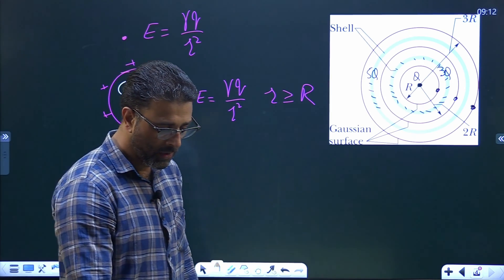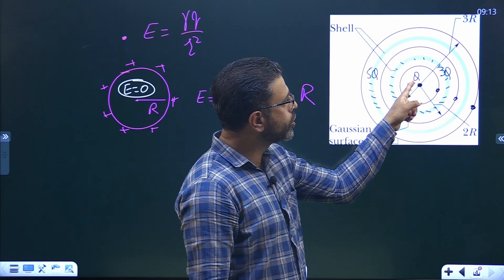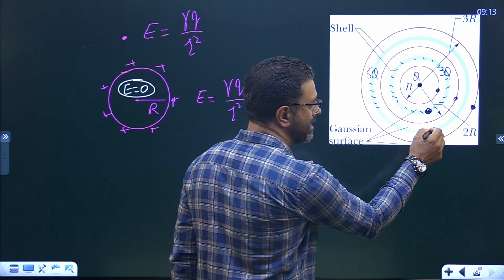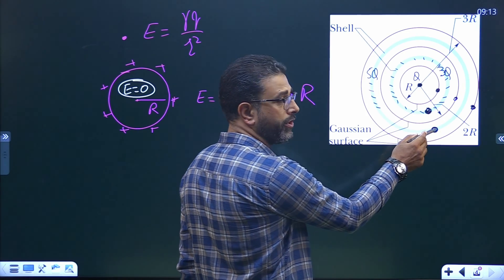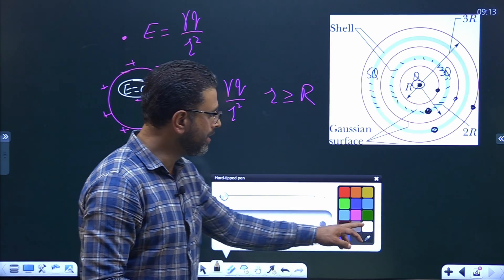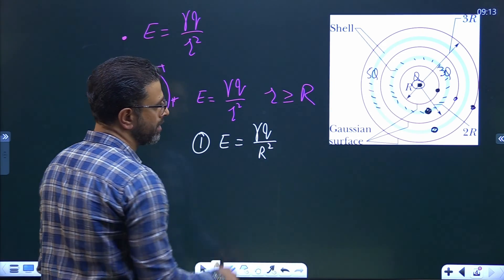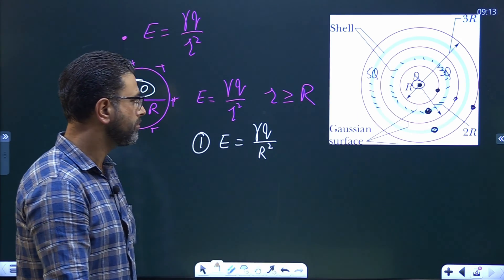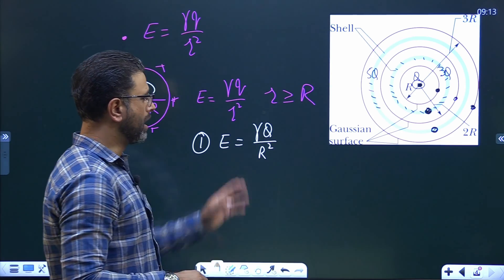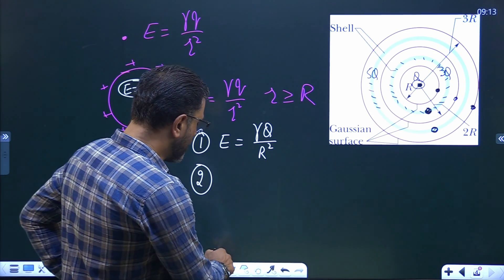For the first Gaussian surface at radius R: it has only charge Q inside it. The point on this surface lies inside both conducting shells, so field due to each shell is zero — there is field only from the central point charge Q. Therefore the field at the first Gaussian surface is γQ/R².